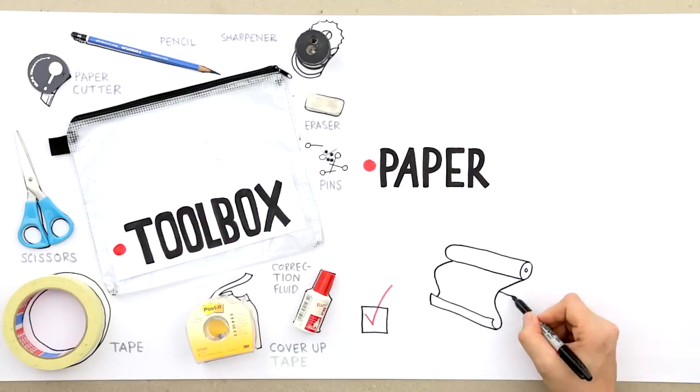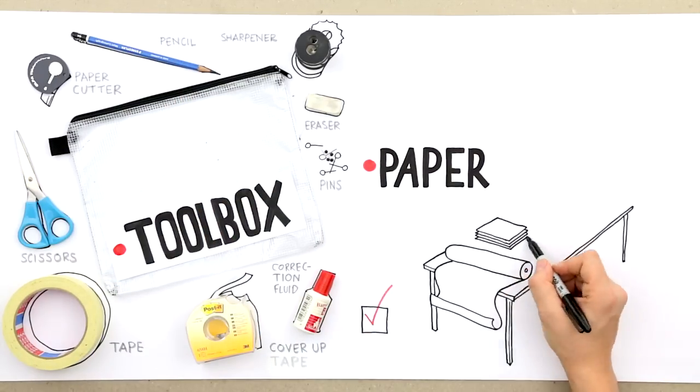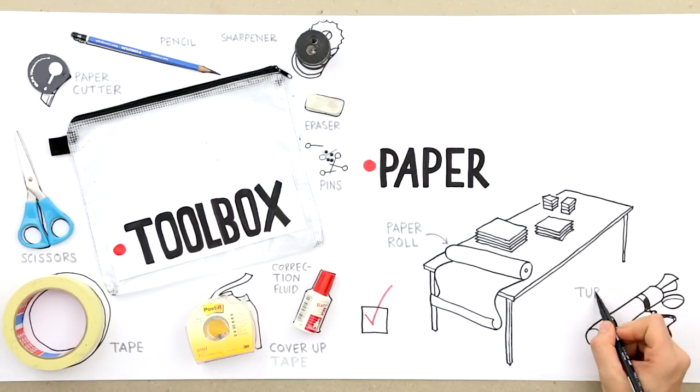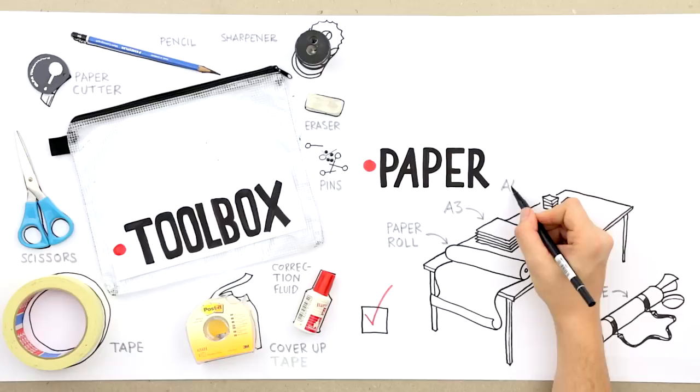You need paper. Plenty of it in all sizes. Large paper rolls make it possible to work in panorama. A tube makes it easy to carry big chunks of paper. What else? A3 and A4 for smaller drawings and sketching quick drafts.